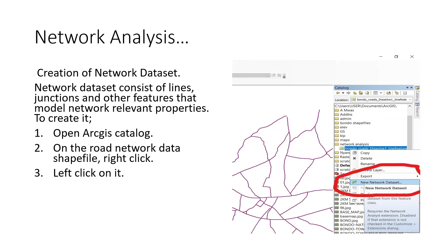For the creation of a network dataset: a network dataset consists of lines, junctions, and other features that model network-relevant properties. To create it, we open the ArcGIS Catalog, locate our road network shapefile, and click on it. As shown in the image, clicking on the shapefile gives you the option to create a new network dataset. You click on it and the dataset is created.